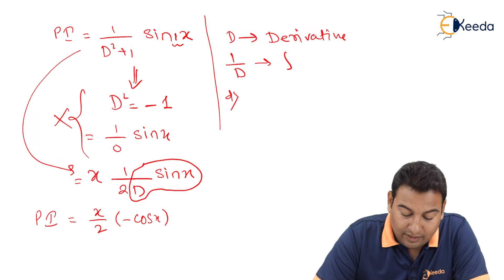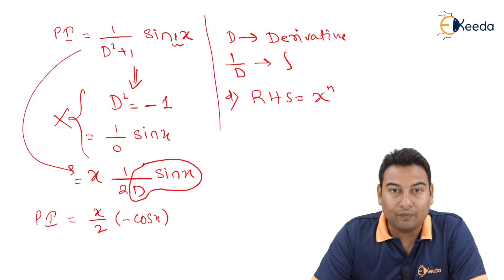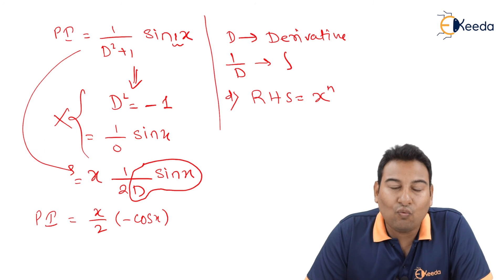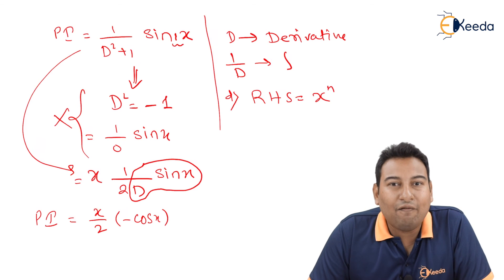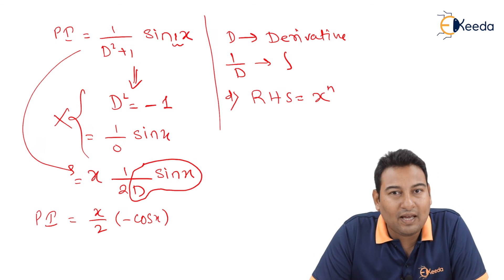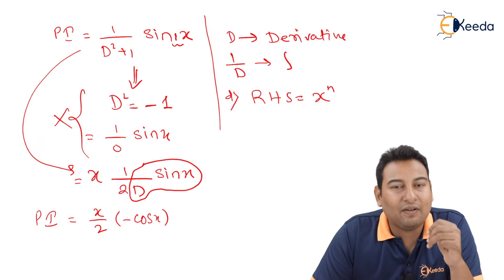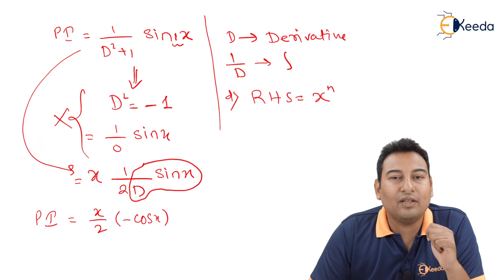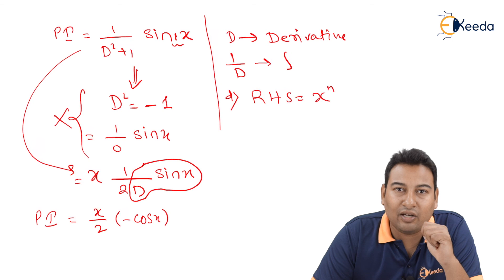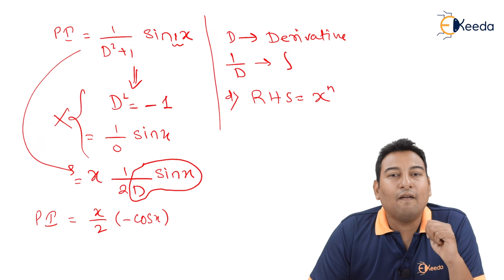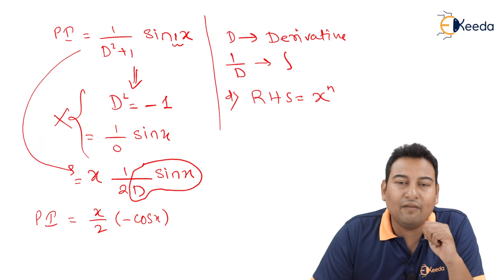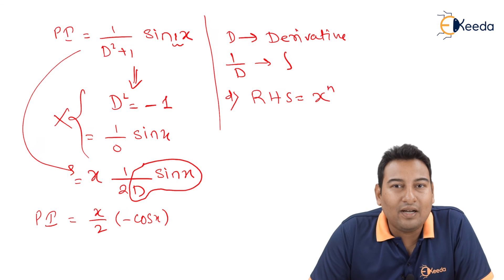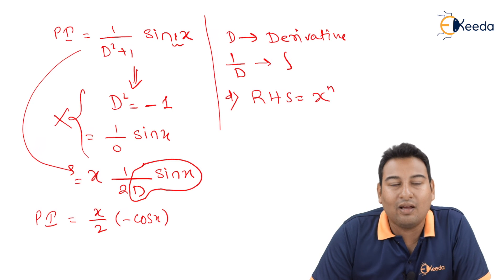The last case, case D, is when RHS = x^n. This will be explained while solving problems. So friends, before watching the next video, this video should be very clear. If it is a higher order equation, the solution is CF + PI. For CF, there are 3 methods: real unequal roots, real equal roots, and imaginary roots. For PI, there are 4 cases: RHS = 0, RHS = e^(ax), RHS = sin(ax+b) or cos(ax+b), and RHS = x^n. In the next videos, we'll use CF + PI to solve problems.